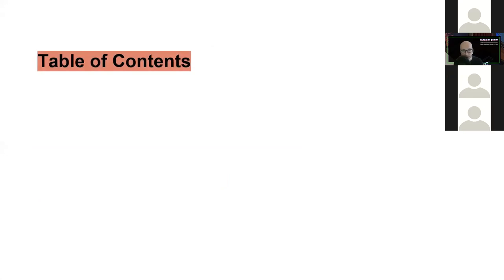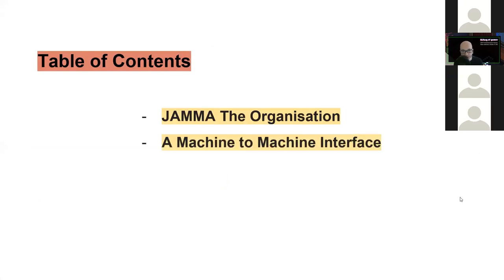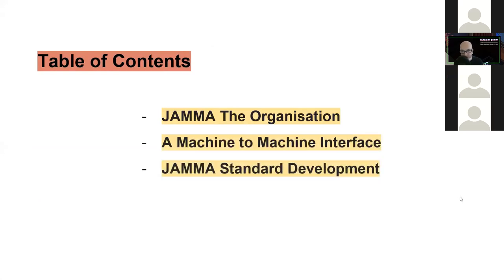Table of contents — it's a very short table of contents, described in the title already. We'll look at the organization, we'll look at the JAMA standard as a machine-to-machine interface and aesthetic constrainer, and then the main part of this talk will be a timeline of the development of the JAMA Arcade standard in 1985, and then wrap it up with a summary and some conclusions.